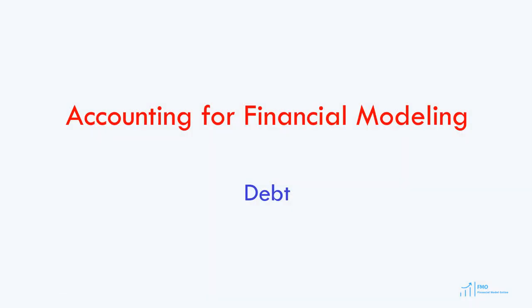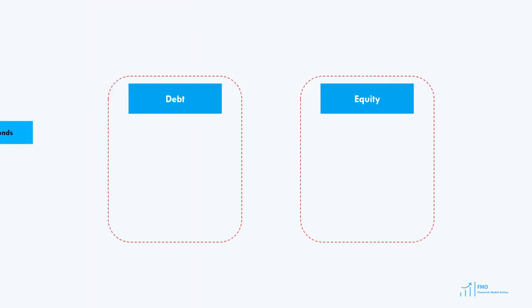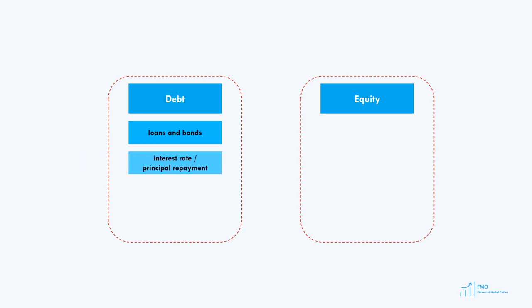Welcome back. In this lesson we will go over the accounting for debt financing. Debt includes loans and bonds, and typically we pay interest on the debt when we borrow money. We also have to repay the principal of the debt, which is the amount of money that we borrowed originally. Debt is typically secured, meaning we have to provide collateral to the bank or other financial institution. Debt investments are low-risk compared to equity because the debt holder has security for the money lent, receives regular interest on the outstanding principal, and only the principal must be repaid.